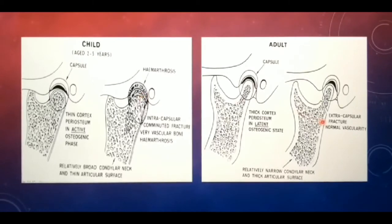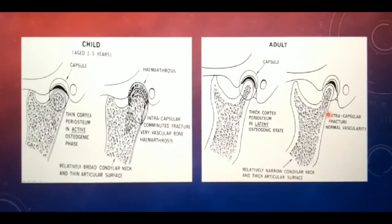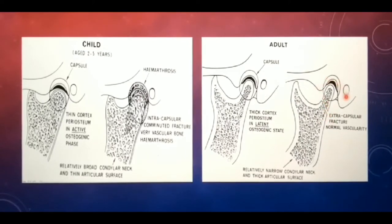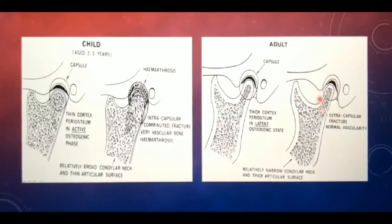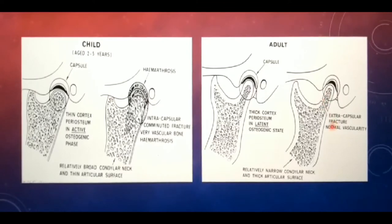On the other hand, in an adult, the condylar neck is relatively narrow and the articular surface is thicker. Hence, an impact to the condyle will result in an extracapsular fracture with normal vascularity.